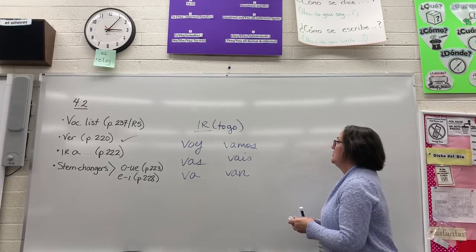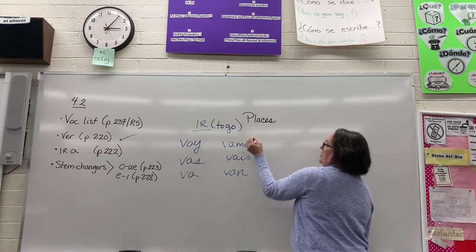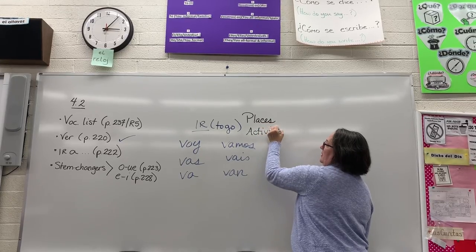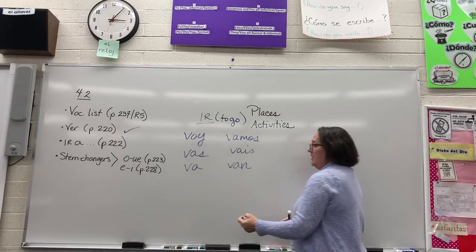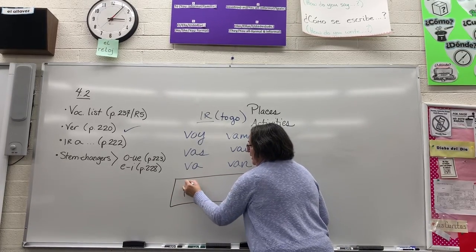Okay, and for each of these you follow a simple formula: you use the right form of ir, the word 'a,' and then whatever you need.